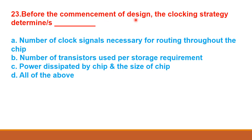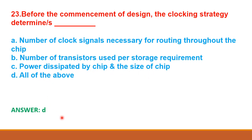Before the commencement of design, the clocking strategy determines — option A: number of clock signals necessary for routing throughout the chip, option B: number of transistors used per storage requirement, option C: power dissipated by chip and the size of chip, option D: all of the above. The correct answer is option D: all of the above.